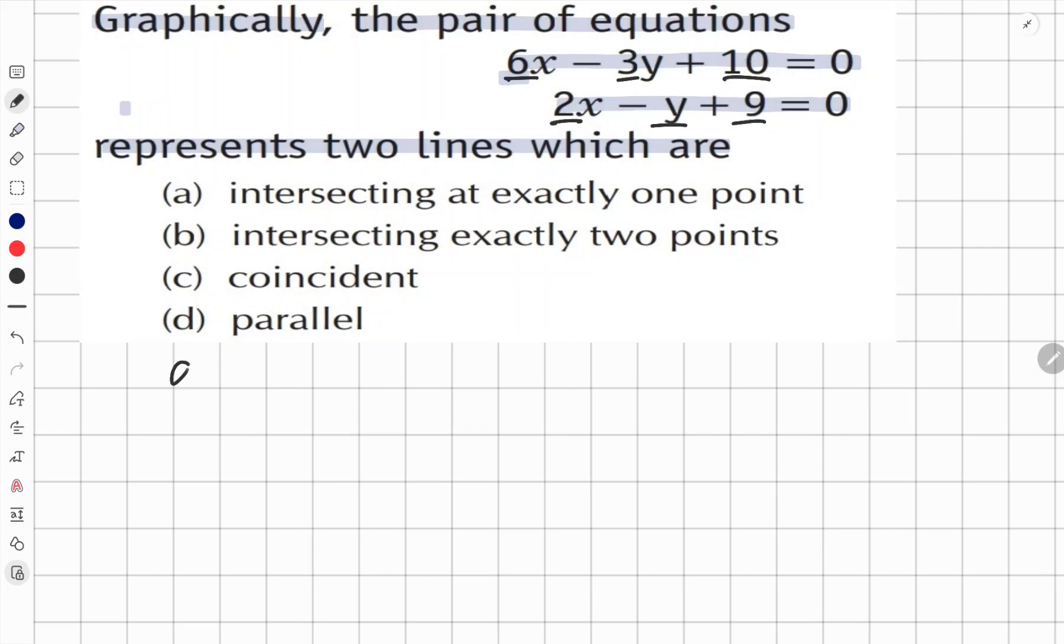So first we are going to find a₁ upon a₂, that is equal to 6 divided by 2. 6 divided by 2, and just cancel it by 2. 2 threes are 6 and 2 ones are 2, so that's 3 to 1.